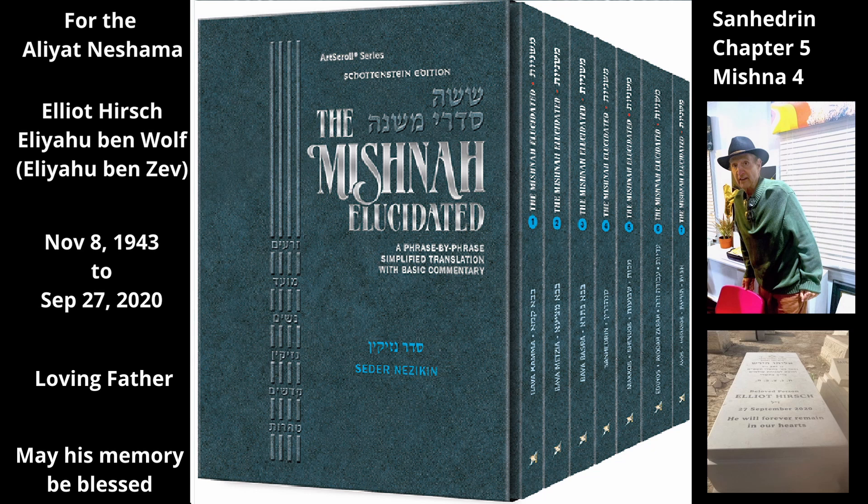The Mishnah relates what happens when a student argues for acquittal. If one of the students said, 'I have a reason to acquit him,' the judges bring him up and seat him among themselves so that he can present his argument to them. Once the student is seated among the judges, he does not go down from there the entire day. If there is something to his words — i.e., his argument seems to be sound — the judges listen to him and discuss what he has to say.